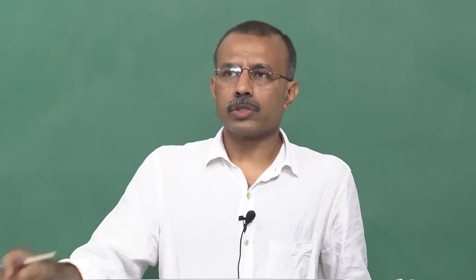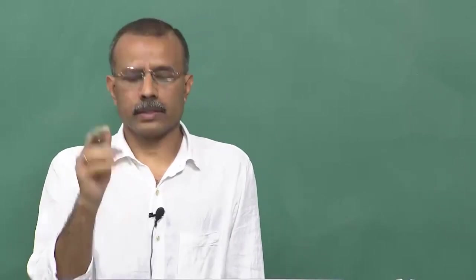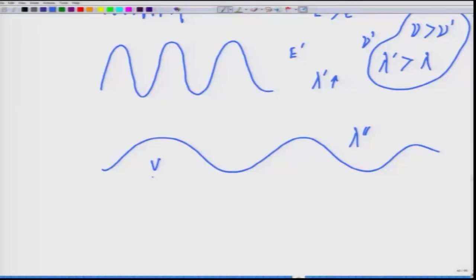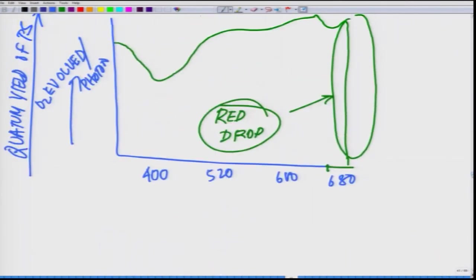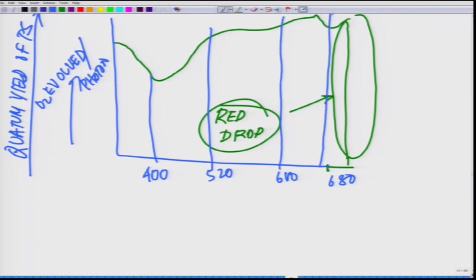The experiment was to see at what wavelength of light — violet, indigo, blue, green, yellow, orange, red — you will get a higher quantum efficiency in terms of photosynthesis and oxygen evolution. It was observed that if you give 400nm you get this much oxygen, 520nm this much, 600nm this much, 680nm this much — at different levels.